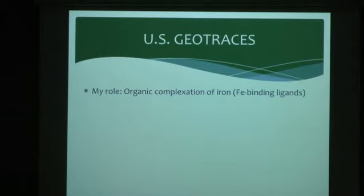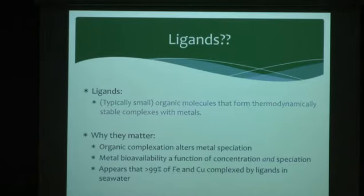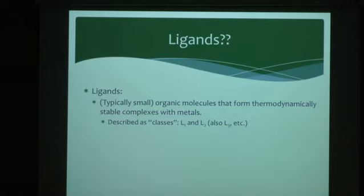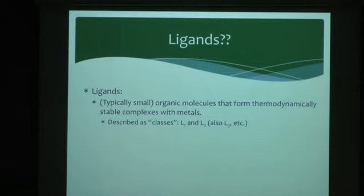What are ligands? These are typically small organic molecules — small meaning dissolved, often in the soluble fraction, though sometimes colloidal in size — that form very stable complexes with metals. We describe them as classes because we don't measure them individually; they're present at nanomolar concentrations in a background of micromolar DOC, roughly 60% of which is nearly impossible to characterize. I use an electrochemical method to divide them into ligand classes: L1 being the strongest, which dominates complexation at ambient metal concentrations, with progressively weaker classes serving as buffers as metal concentration changes.